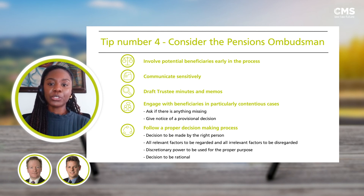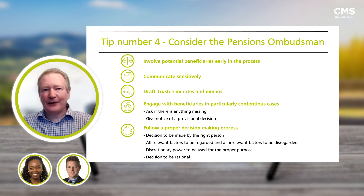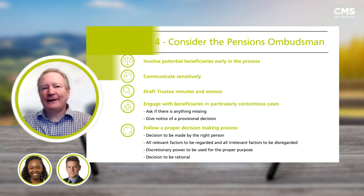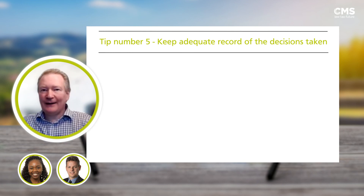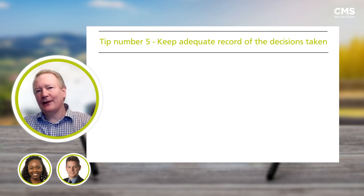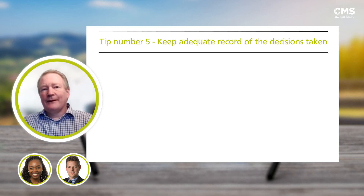I'll now hand over to Alistair who is going to talk through the last point for trustees to consider. Thanks Doyen. The fifth and last tip is to think about how you want to record decisions that are taken. This relates in a way to the last point that Doyen has just made, because you want to make sure that if a complaint is ever made to the Pensions Ombudsman, you're in a position to disclose adequate records of the decision that you took.